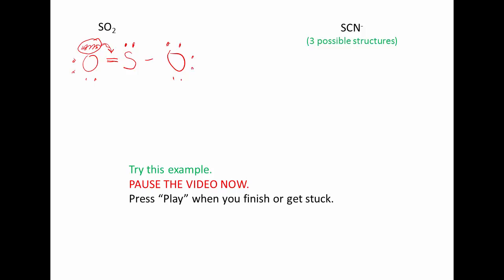So now pause the video. There are three possible structures for SCN minus. I want to see if you can get all three of those structures. When you think you have them, press play and see how you did.